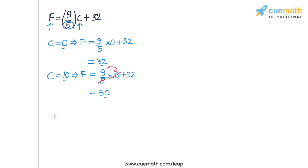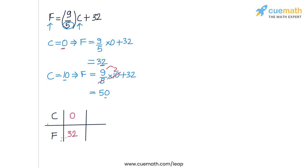We write these two solutions in a table with C for Celsius and F for Fahrenheit. The first solution is (0, 32): 0°C equals 32°F. The second solution is (10, 50): 10°C corresponds to 50°F. We will now plot the solution line for this equation using these two specific points.